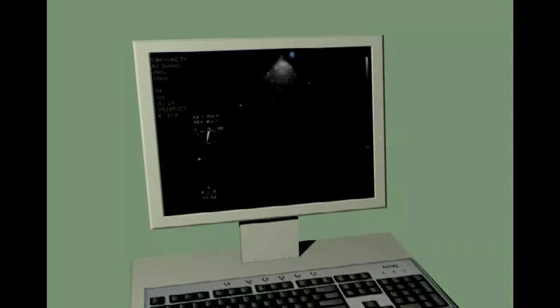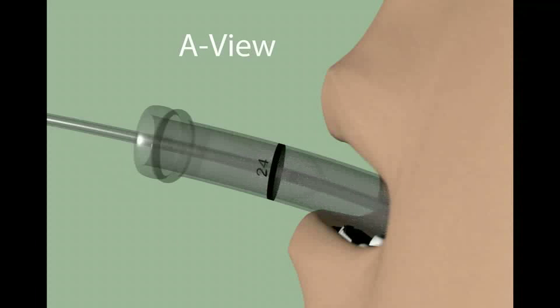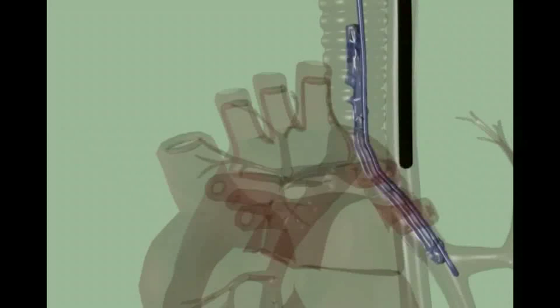A standard TOE combined with the user-friendly A-view will visualise the relevant part of the aorta completely. A catheter carrying a balloon is introduced into the trachea.